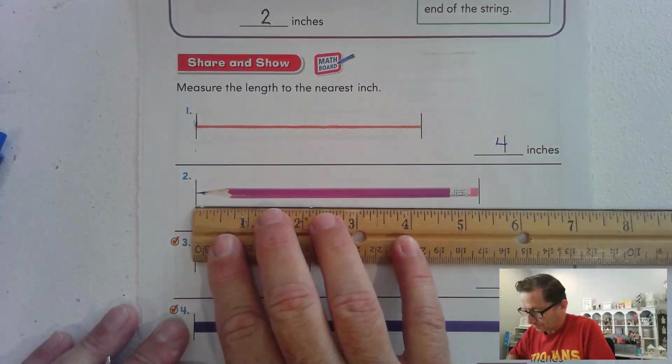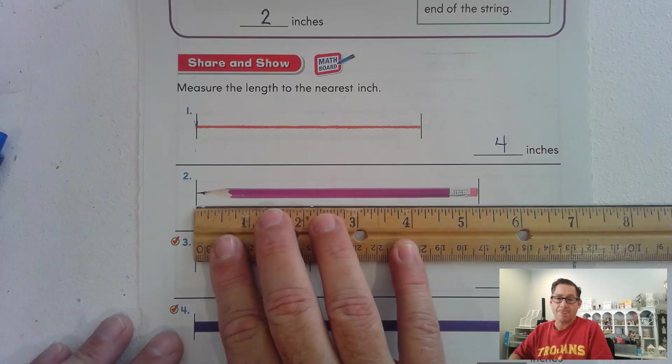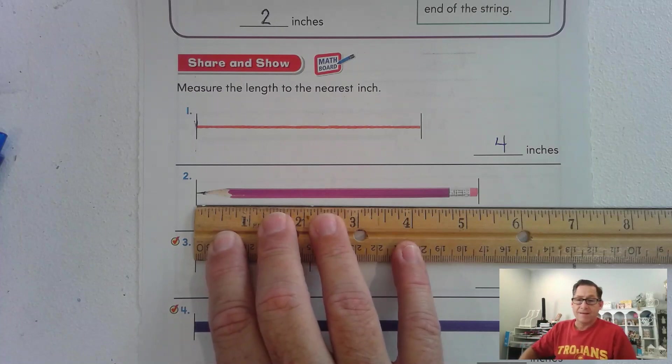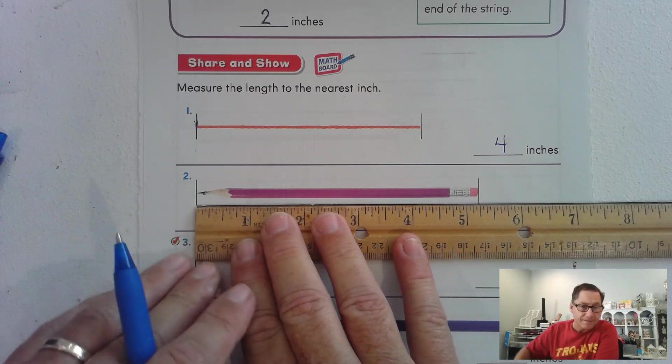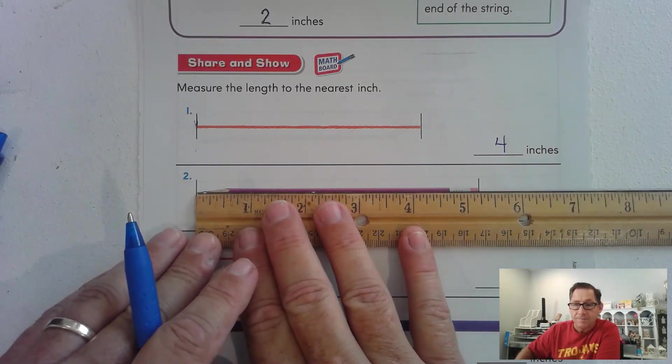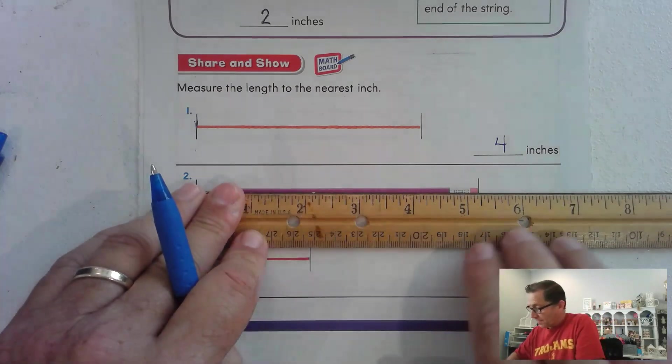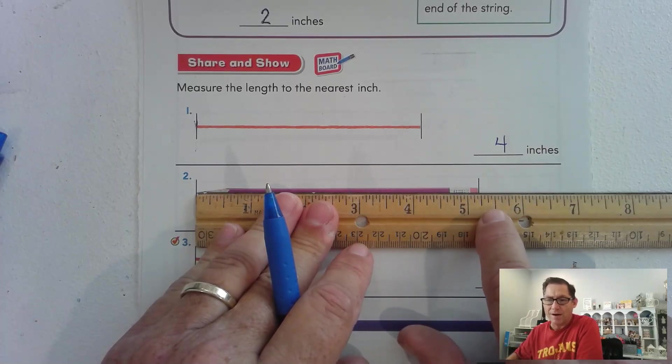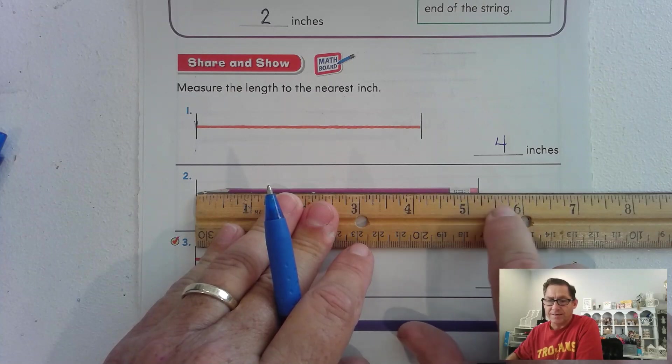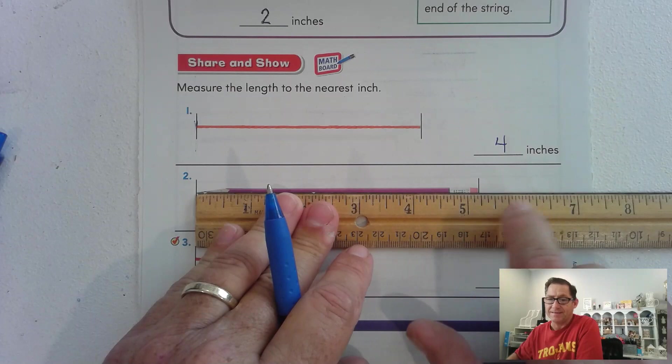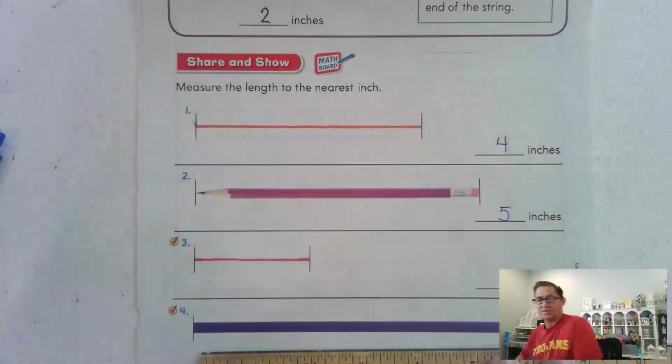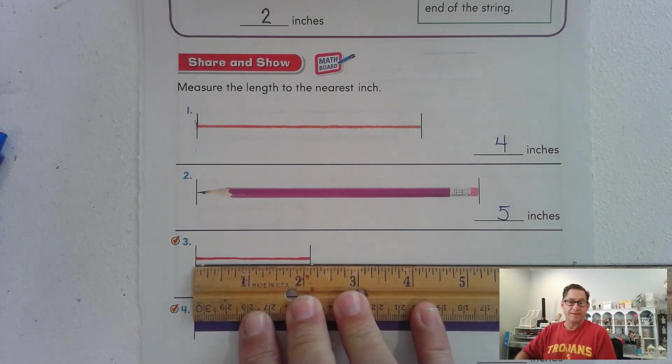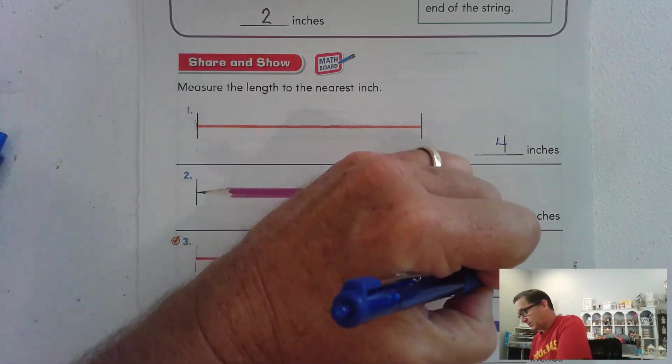Let's measure this one. So we line up the zero mark. And this one could be a little tricky. But if we look here, this long line in between the five and the six, that means the halfway mark. So this one hasn't reached halfway. So it's closer to the five than it is to six. So five inches. How about the third one? It's just barely past two. So it's closest to two inches.